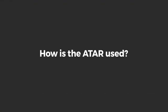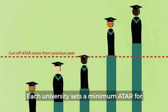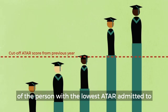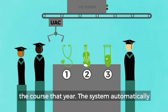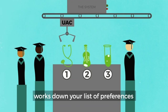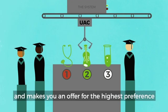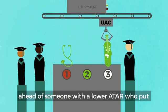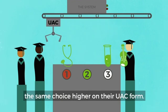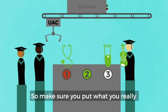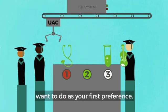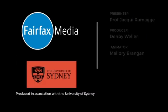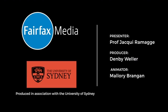How is the ATAR used? Each university sets a minimum ATAR for each course, and the cut-off is the score of the person with the lowest ATAR admitted to the course that year. The system automatically works down your list of preferences and makes you an offer for the highest preference that you qualify for. You will get an offer ahead of someone with a lower ATAR who put the same choice higher on their UAC form. So make sure you put what you really want to do as your first preference — you have nothing to lose and everything to gain.